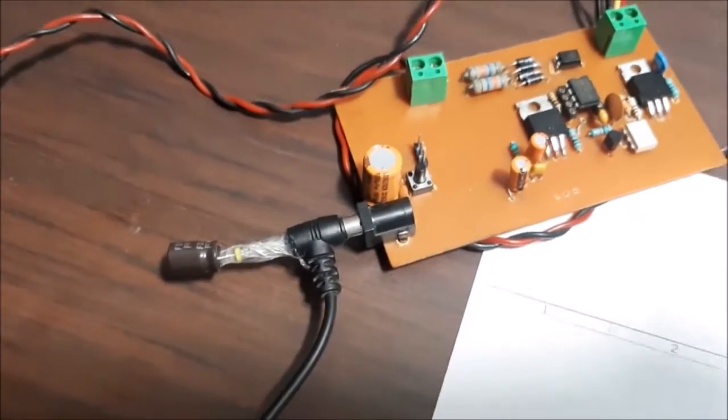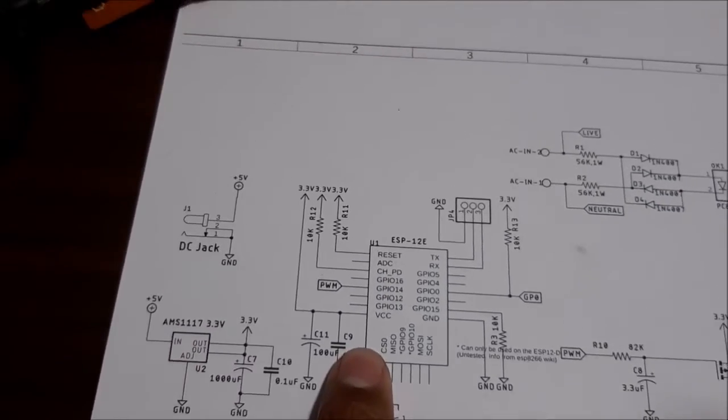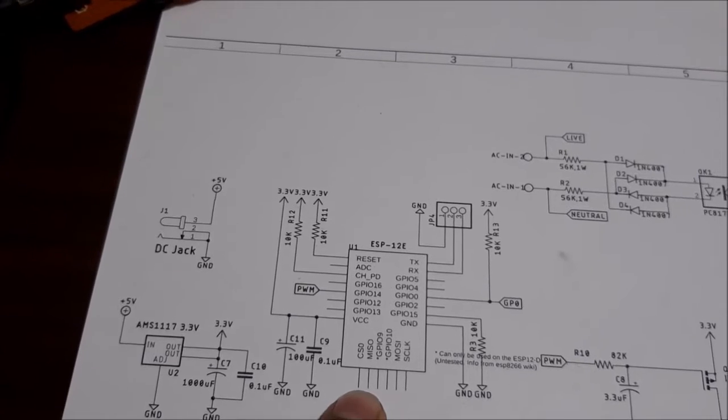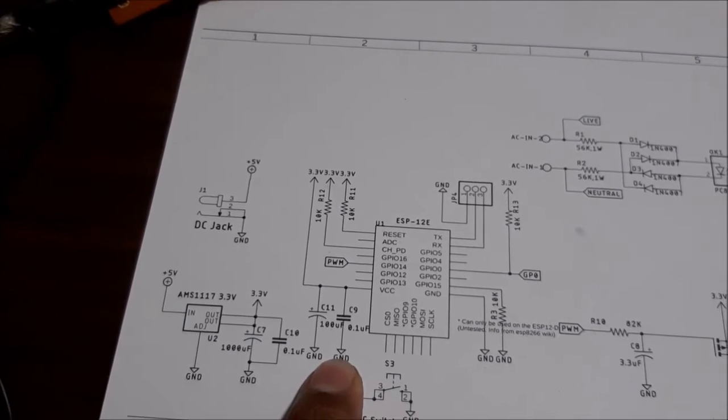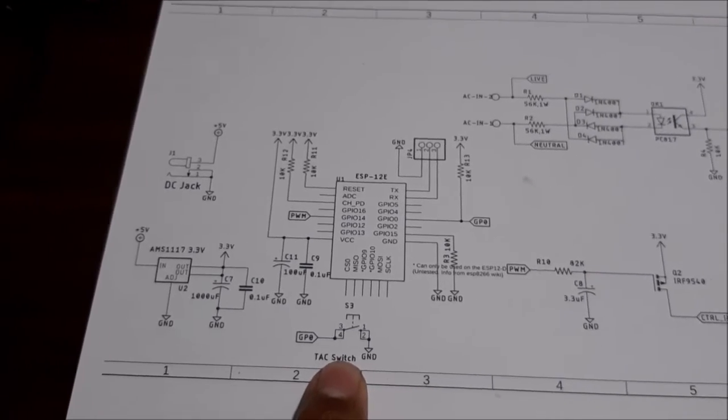This is the ESP8266 configured as per the datasheet recommendation. Here are all the input and filter capacitors. Here is the GPIO zero pull-down switch which puts the ESP in programming mode. Here is my zero crossing detection circuit.